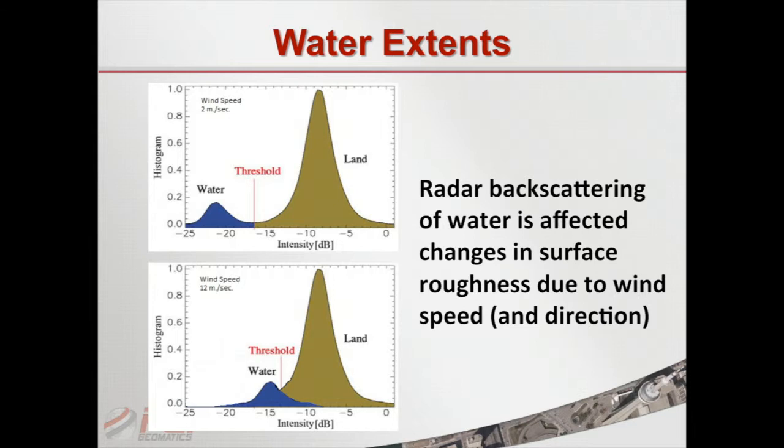What could possibly go wrong? Radar backscattering is affected by surface roughness, which is due to wind. Normally when there's no wind at all, water is nice and smooth and radar energy bounces off into the distance. But as the wind speed starts to pick up, you get capillary waves that act like little mirrors reflecting back to the radar, so you get much brighter backscattering.